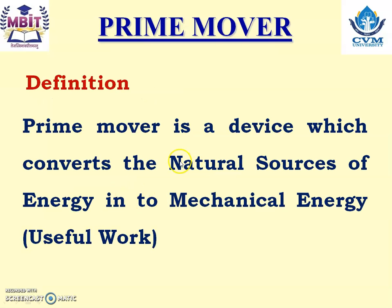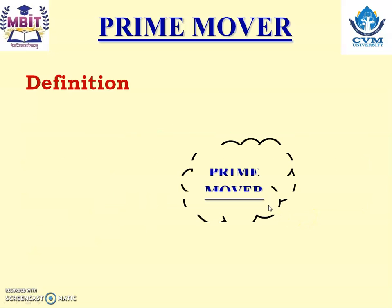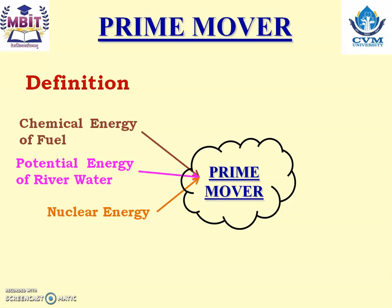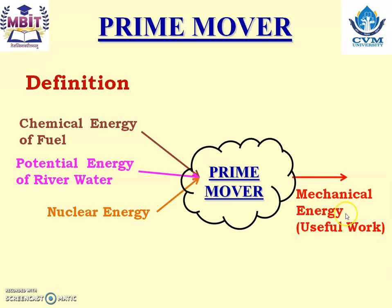Prime movers is a device which converts the natural source of energy into mechanical energy or useful work. Let us study it graphically. Let us consider this is a prime mover. So what will be the input to the prime mover? It will be the natural source of energy — maybe chemical energy of fuel, potential energy of river water, or nuclear energy. The prime mover converts this natural source of energy into useful work or mechanical energy.